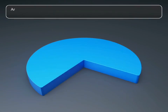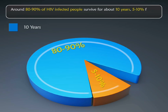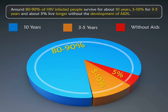Around 80 to 90% of HIV infected people survive for about 10 years, 5 to 10% for 3 to 5 years, and about 5% live longer without the development of AIDS.